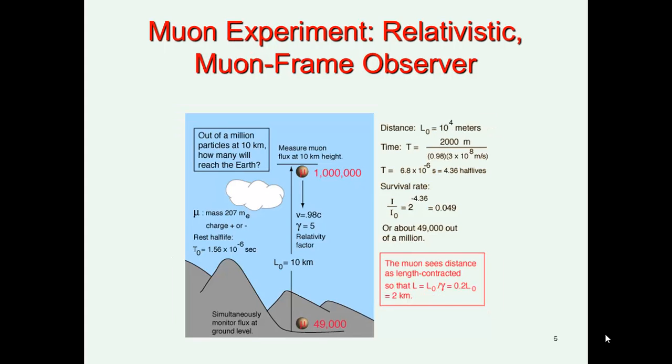We can have some further proof if we think about this from the muon frame of reference. Now, in this case, what happens is that the rest half-life is still exactly the same, 1.56. What changes now is we see length contraction. So the muon, rather than seeing travelling 10 kilometres, length contraction means it only appears to be about 2,000 metres. So in this case, 2,000 metres gives us 6.8 times 10 to the minus 6 seconds, which is 4.36 half-lives. So here, the survival rate is also about 49,000 out of every million muons reaches the ground.